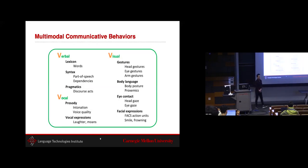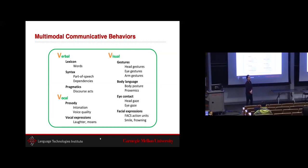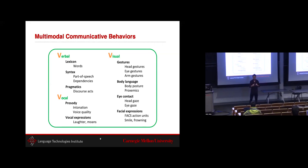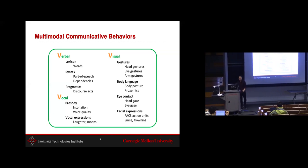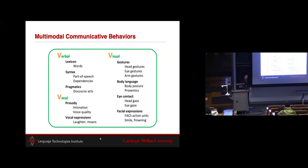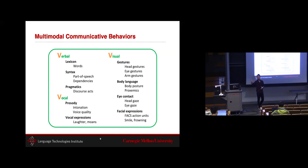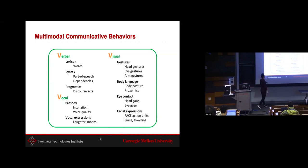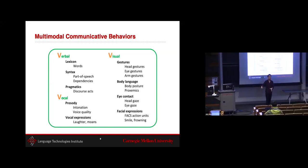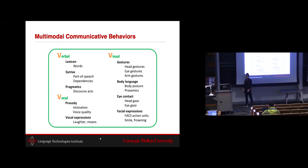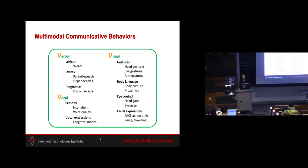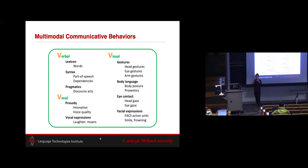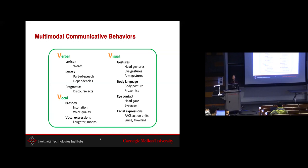As computers, we can process multimodal communicative behaviors — what people in HCI call the three Vs: verbal, vocal, and visual. The verbal modality looks at how we use words and phrases. The vocal modality covers tone of voice and nonverbal expressions like laughter, moans, and shouts. The visual modality includes hand gestures, body language, posture, and eye gaze, which is a very important aspect of showing you're paying attention to a speaker.